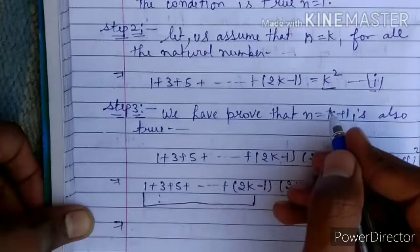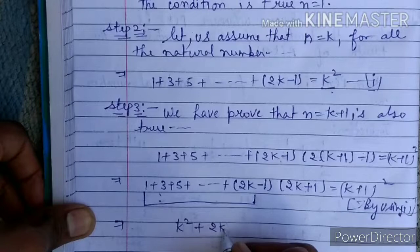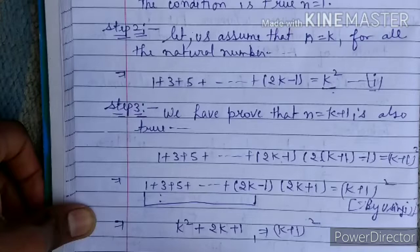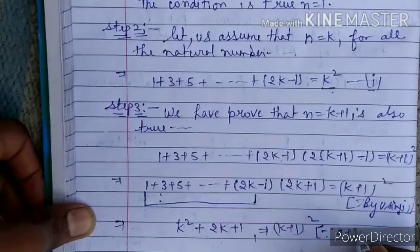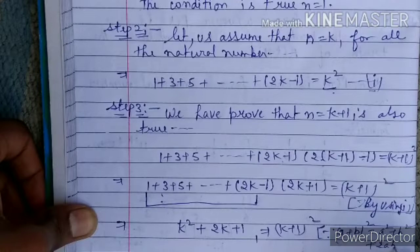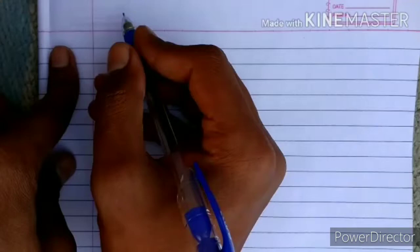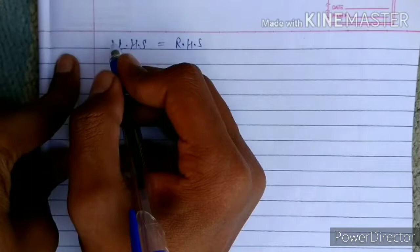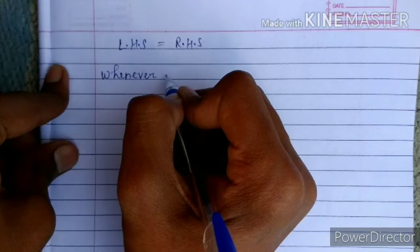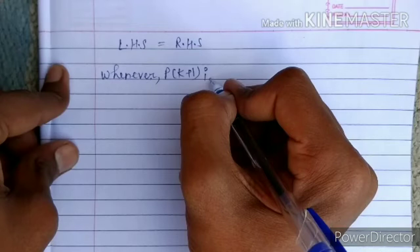So we get k² + 2k + 1, which equals (k+1)² — using the identity (a + b)² = a² + 2ab + b². Therefore the left-hand side equals the right-hand side, and P(k+1) is true whenever P(k) is true.